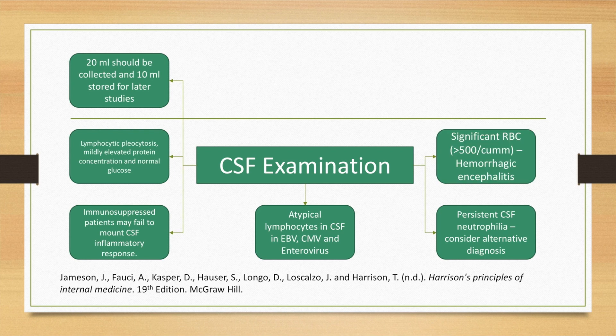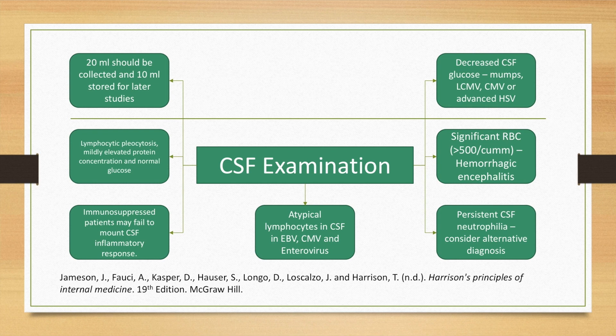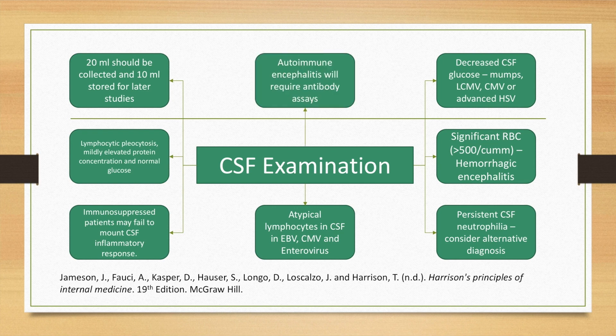Significant red blood cells of more than 500 per cubic millimeter after a traumatic tap has been ruled out generally indicates hemorrhagic encephalitis. Decreased CSF glucose is also possible in certain viral conditions like mumps, cytomegalovirus, and advanced herpes simplex virus. In general, autoimmune encephalitis will require antibody assays.